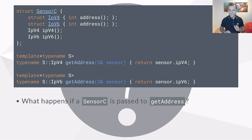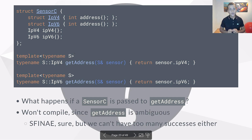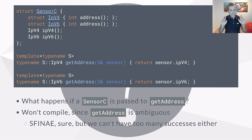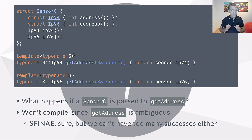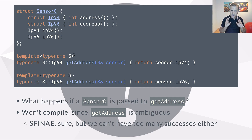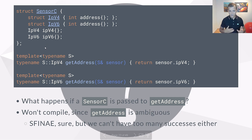This will not compile because get_address is now ambiguous — you have two candidates that are equally suitable for the call, so the compiler does not know which one to pick. So yes, SFINAE requires that as long as there's a candidate that compiles, but there cannot be too many viable candidates either. So far I have shown you how to use SFINAE without introducing any new or exotic features of the language — a C-style array of size 0 that cannot compile, and a member variable or subclass that does not exist.